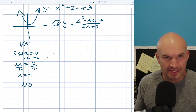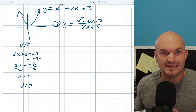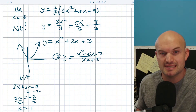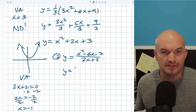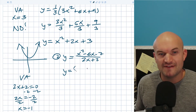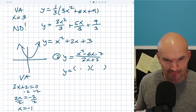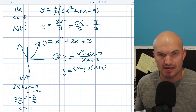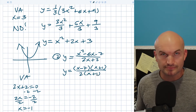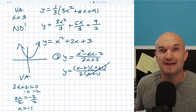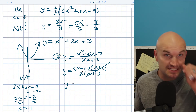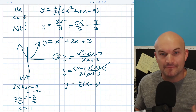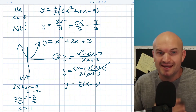One thing you should always do before finding vertical asymptotes is simplify. We want to factor this: the numerator factors as (x - 7)(x + 1) — two numbers that multiply to give negative 7 and add to give negative 6. The denominator factors as 2(x + 1). Now what I want you to see is the (x + 1) terms divide out. So the simplified version is (x - 7) over 2. Because the (x + 1) divided out, this is what we call a removable discontinuity, not a non-removable discontinuity.